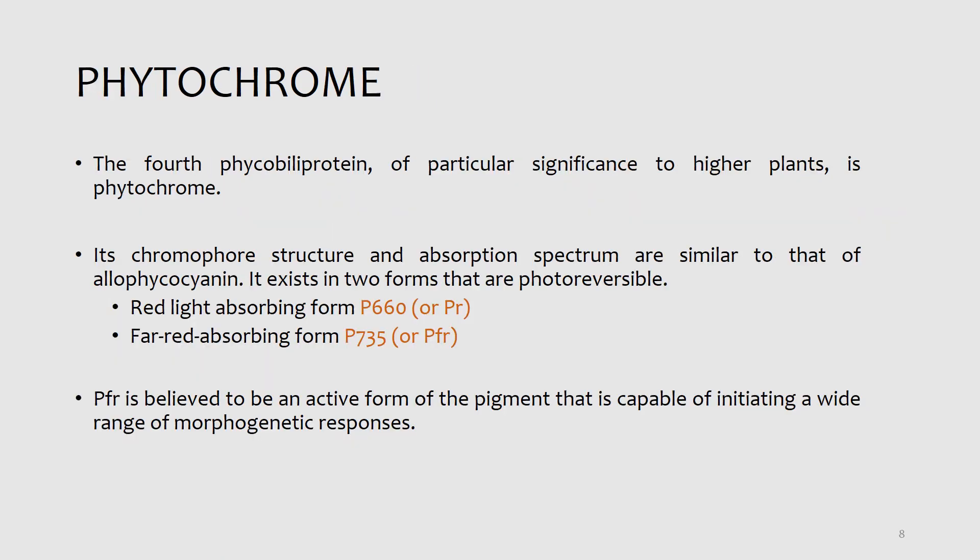The next pigment is phytochrome. The fourth phycobiliprotein of particular significance to higher plants is phytochrome, which is a receptor that plays an important role in many photomorphogenic phenomena. Its chromophore structure and absorption spectra are similar to that of allophycocyanin. Phytochrome, which literally means plant pigment, is unique because it exists in two forms that are photoreversible. Photoreversible means that light can convert the pigment from one form to the other, and the condition can be reversed.